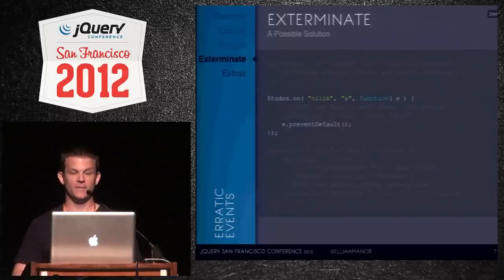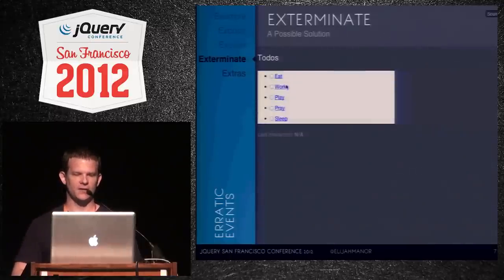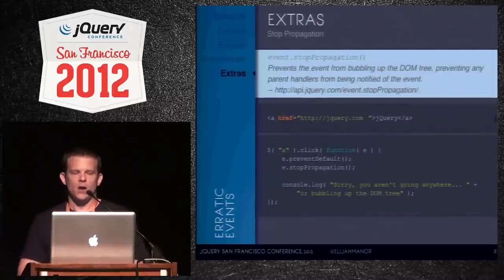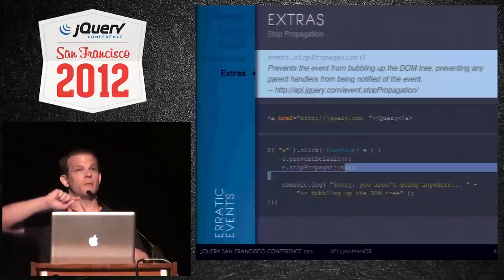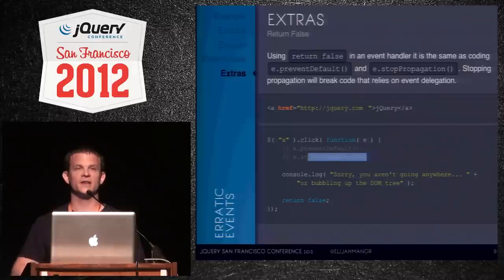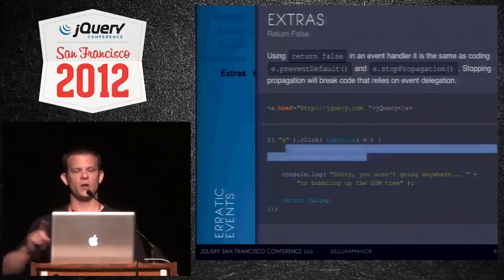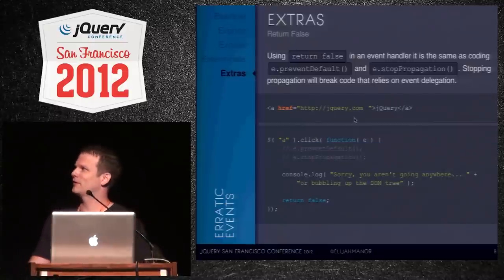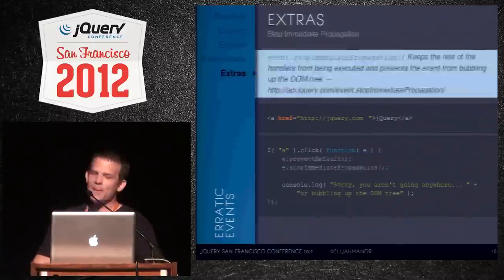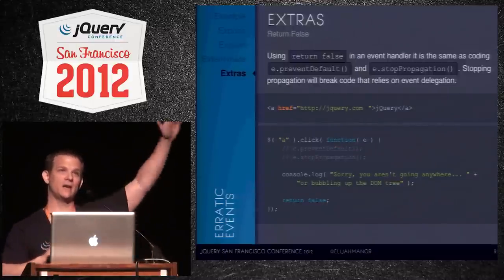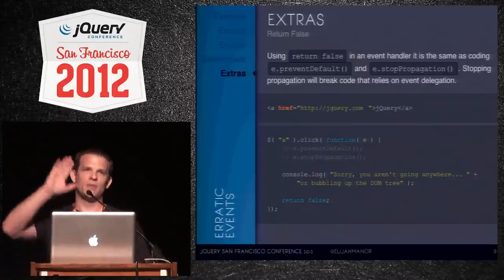The fix is simple: use event.preventDefault() instead of return false. This stops the anchor's default behavior but still lets the event bubble up to the unordered list. After the fix, clicking an anchor updates the time correctly. People abuse return false thinking they just don't want the page to navigate, not realizing it may break delegated event handlers higher up the chain — and the more you build large websites, the more you rely on delegation for performance.